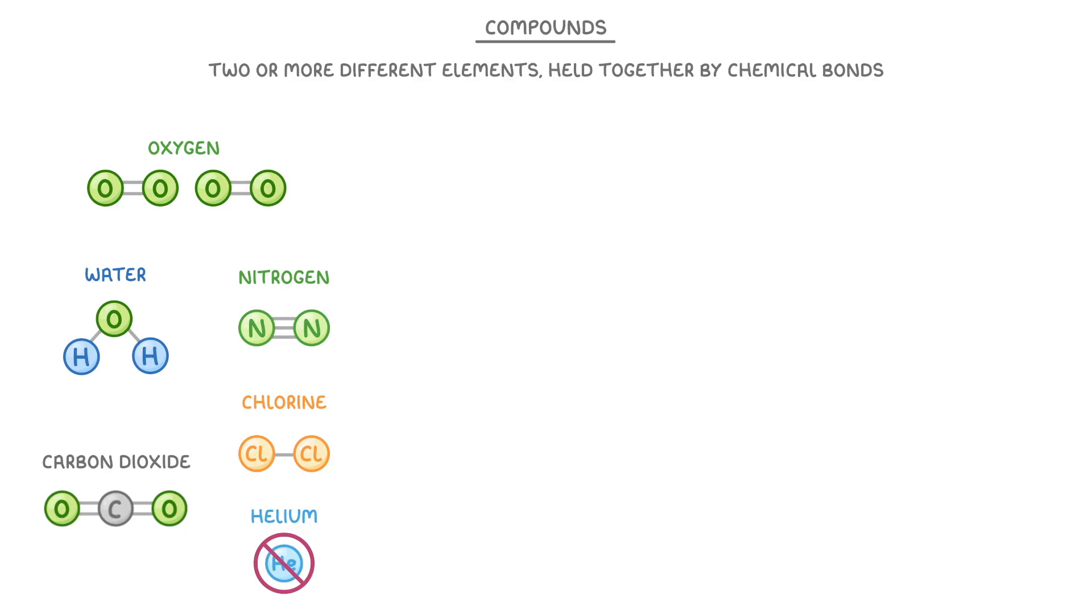So if we look at our molecules, a lot of these will also be compounds, because they contain two or more different elements. For example, water would be a compound because it contains the elements hydrogen and oxygen. And carbon dioxide would be a compound because it contains the elements oxygen and carbon.